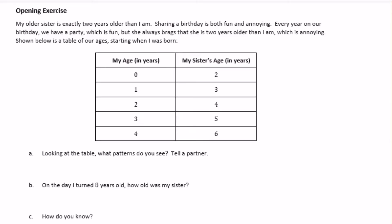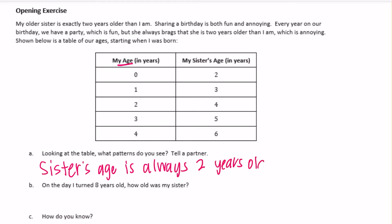So when I was 0, sister was 2; when I was 1, sister was 3; when I was 2, sister was 4; 3 and 5; 4 and 6. Looking at the table, what patterns do you see? I notice that the sister's age is always two more than my age. Sister's age is always two years older than my age.